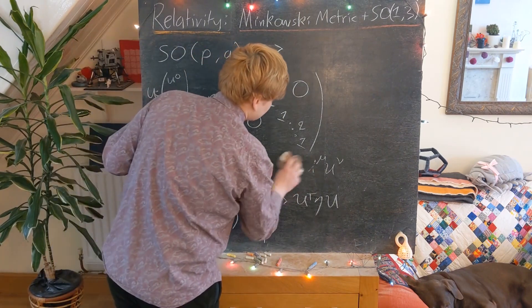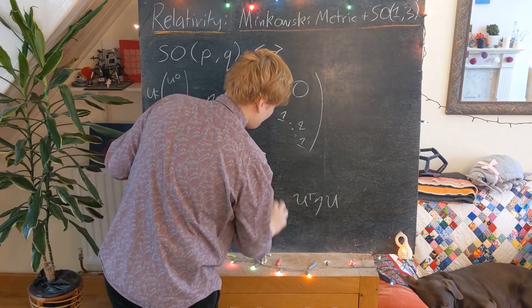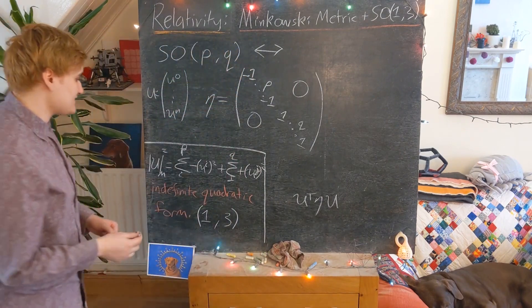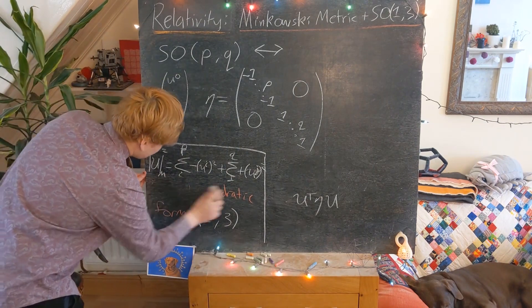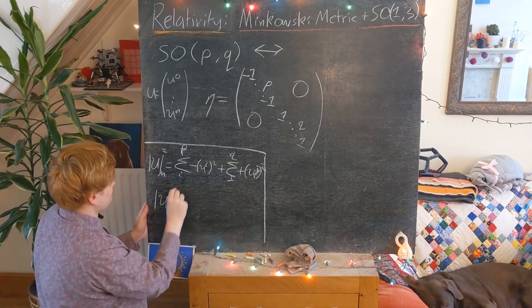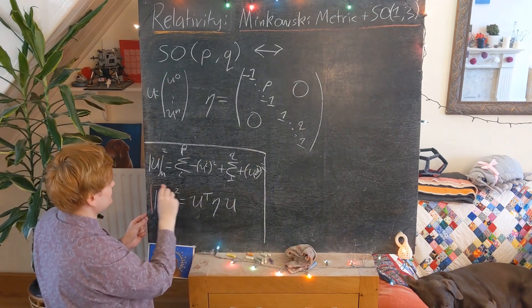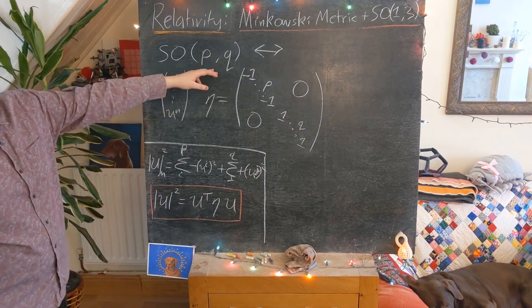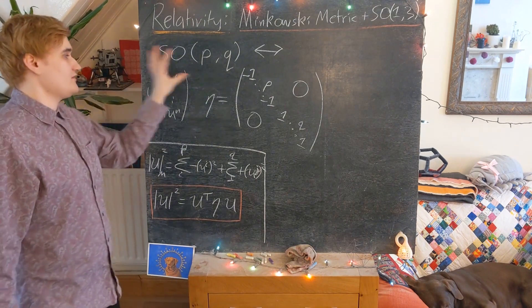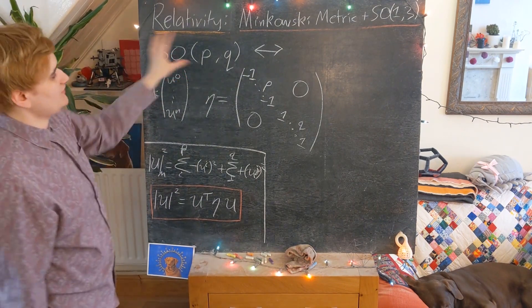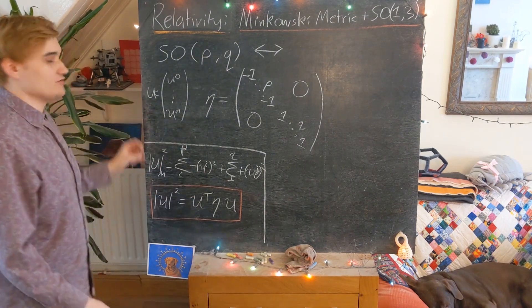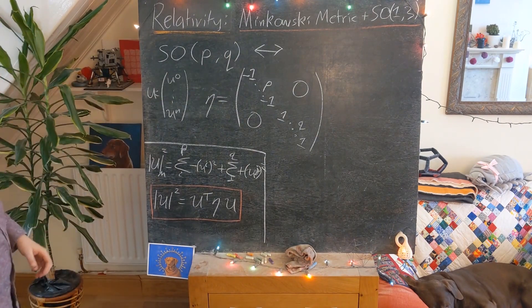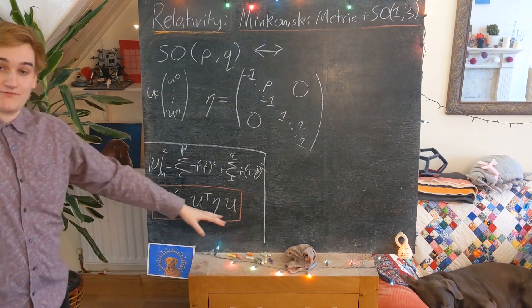I'm going to focus on this matrix expression for our quadratic form — U^transpose eta U — as it's going to be the most useful and relates nicely to things we've seen before. So I'll put that in a box. This is how we express our quadratic form. Now we're going to realize that SO(P,Q) is a group of transformations with a representation that acts on vectors U, and the group elements are those that leave this quadratic form invariant.